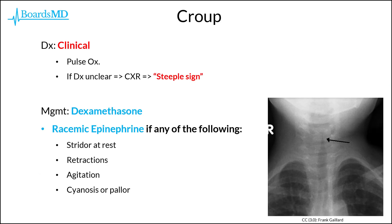In many cases, croup can be diagnosed clinically, as it has a very classic presentation and age range. We should also have these patients on a pulse ox in order to monitor their oxygenation, and ultimately, if there's any ambiguity in terms of the diagnosis, we can get a chest x-ray, which is classically going to show a steeple sign.